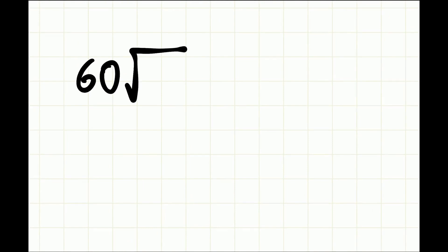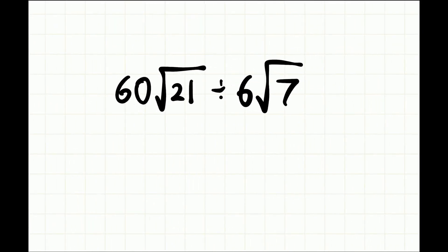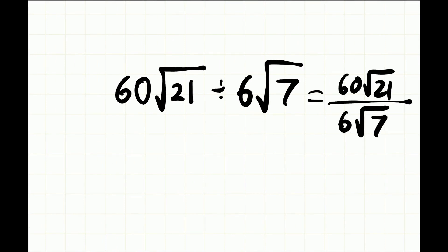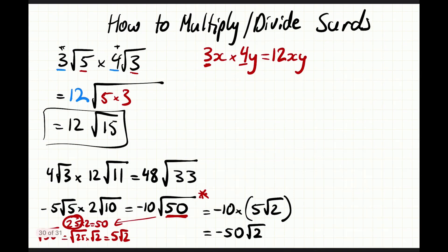Let's consider a final example: 60√21 divided by 6√7. We write it as a fraction — 60√21 over 6√7. We know 60 divided by 6 is 10, and 21 divided by 7 is 3, so we're left with 10√3. That is how you divide surds. Sometimes they can get messy if fractions can't be simplified, but the same process applies — multiply or divide the terms on the outside, then the terms on the inside.